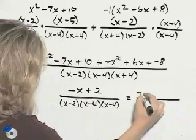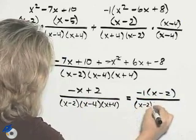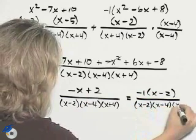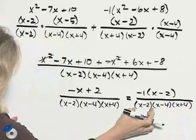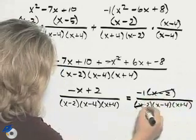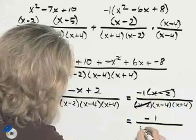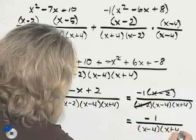is I will write negative 1 times x minus 2. I'll place that over the denominator so that I can see what I'm going to divide out. And I notice that I have a common factor of x minus 2, so they divide out. And I'm left with negative 1 over x minus 4 times x plus 4.